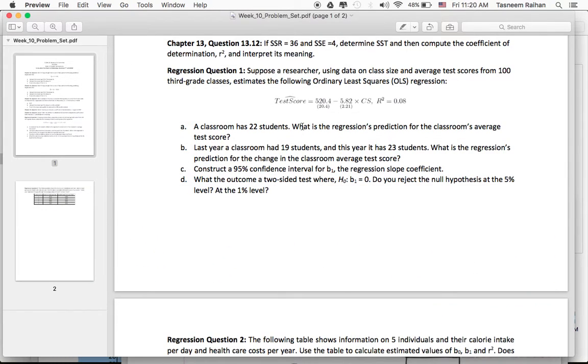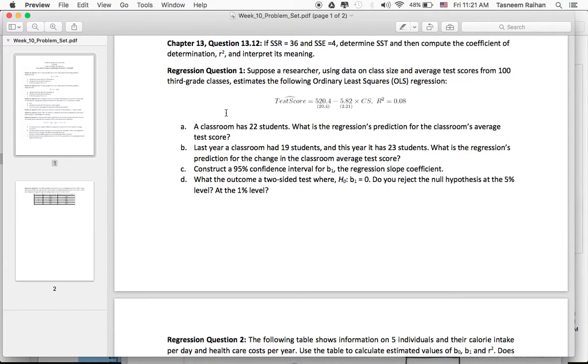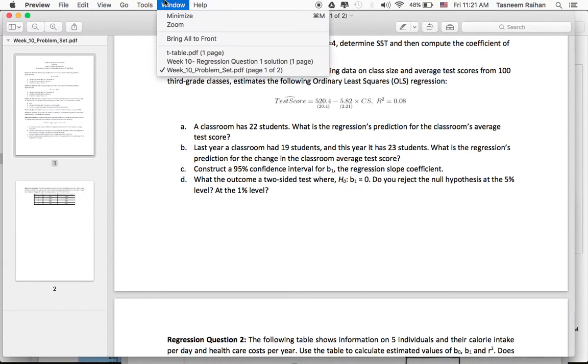Last year a classroom had 19 students, and this year it has 23 students. What is the regression's prediction for the change in the classroom average test score? As I told you in the class, there are two different ways of solving this. One is more straightforward but longer. Another is a shortcut method. Because I already talked about the longer way in the class, I'll skip that and just talk about the shortcut method.